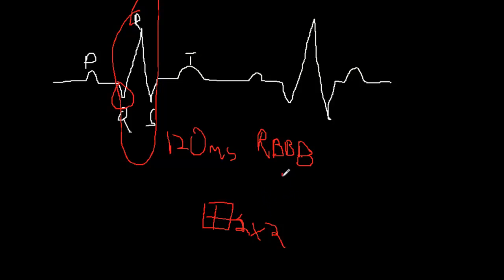So the way I like to look at bundle branch blocks is you want to look at V1, V6. In a right bundle branch block, you'll see something like, here's my P wave. And then the R will look something like this. And this is called the R wave. This is your S wave. And this is called the R prime wave because this is all the QRS complex. And often this is called the RSR or RSR prime complex.